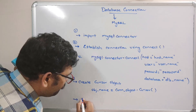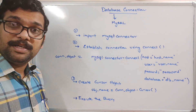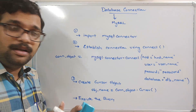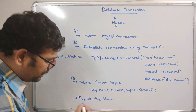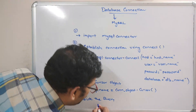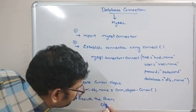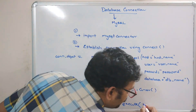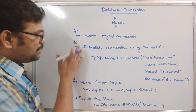The fourth and final step is to execute the query. To access data from the database we write SQL queries — for creating a table, deleting content, altering a table, each operation has a different query. Execution is done using the cursor object: cursor_object.execute("query"). We write the query as a parameter to the execute method, inside double quotation marks.